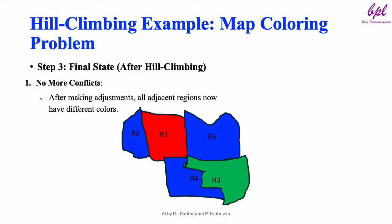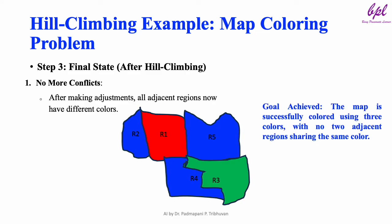Step 3: Final state. After making adjustments, all adjacent regions now have different colors. The final color assignment is: R1 red, R2 blue, R3 green, R4 blue, R5 blue. There are no conflicts in the final solution. The map is successfully colored using 3 colors with no two adjacent regions sharing the same color. Our goal is achieved.